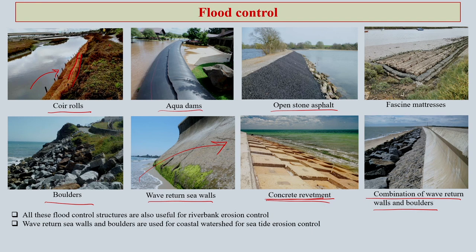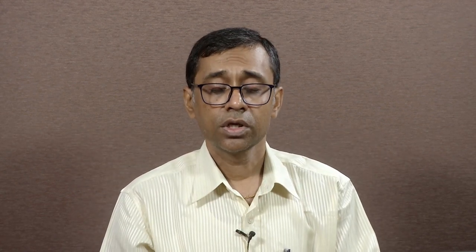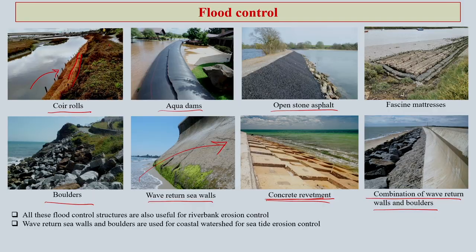All these flood control measures are also useful for riverbank erosion control. This is why I am sharing all the options that people use across the world — it is a basket of options. Given the situation and opportunities, some of these options can also be utilized for riverbank erosion. Wave-written sea walls and boulders are used mainly for coastal watersheds to reduce sea tide erosion. We have a lot of technological options to reduce the impact of floods; we may not be able to totally stop it, but the effect can certainly be reduced if proper measures are taken.